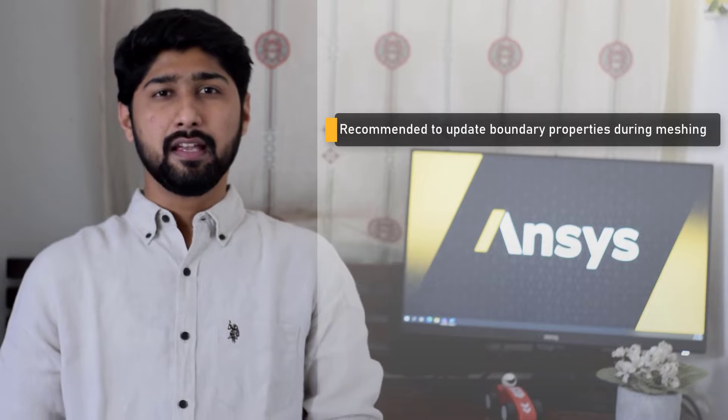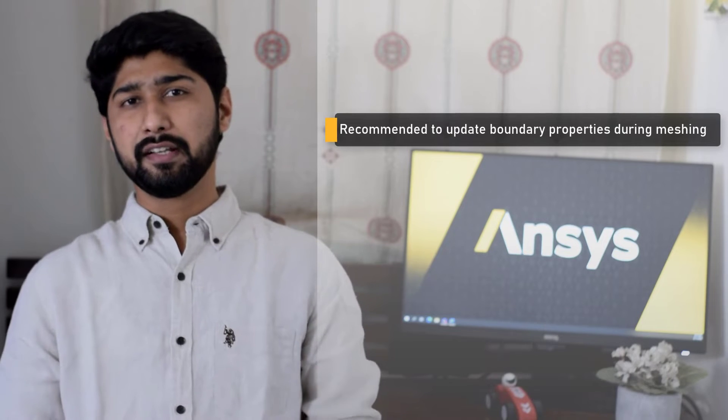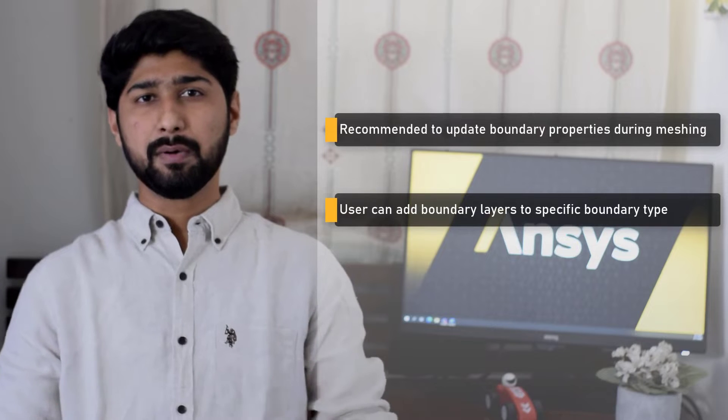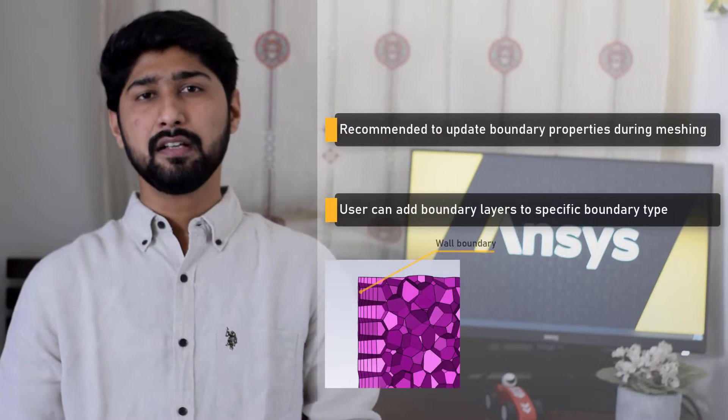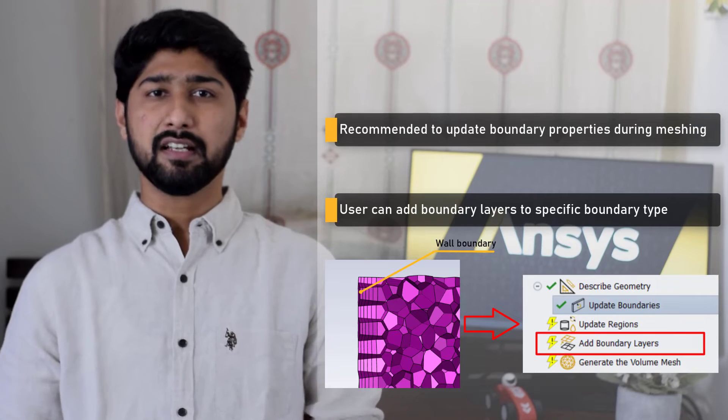Though modifying the name and type of the boundaries can be done in the Fluent solver after importing the mesh, it is recommended to do that in the meshing phase using the update boundaries task in the Watertight Geometry workflow. By defining these properties even before generating the volume mesh, the user can add boundary layers to particular boundaries of interest — that is, the wall type boundaries — using the add boundary layer task later in the workflow.